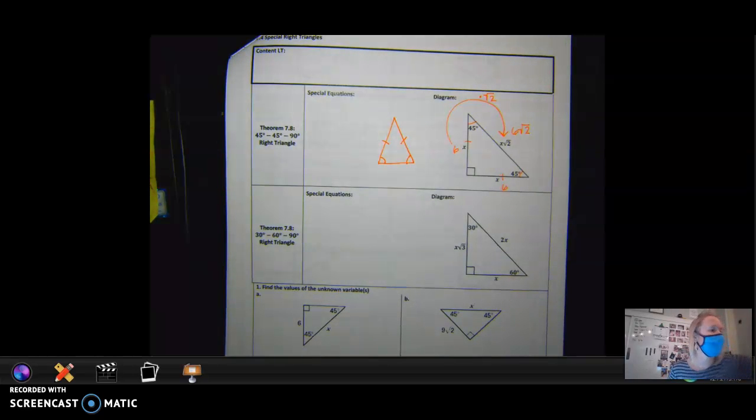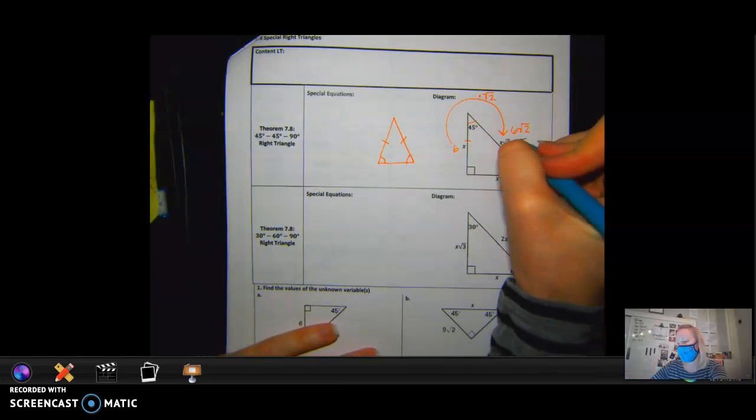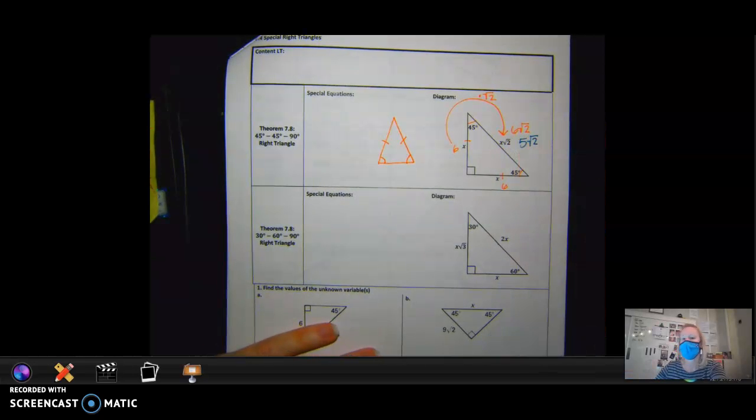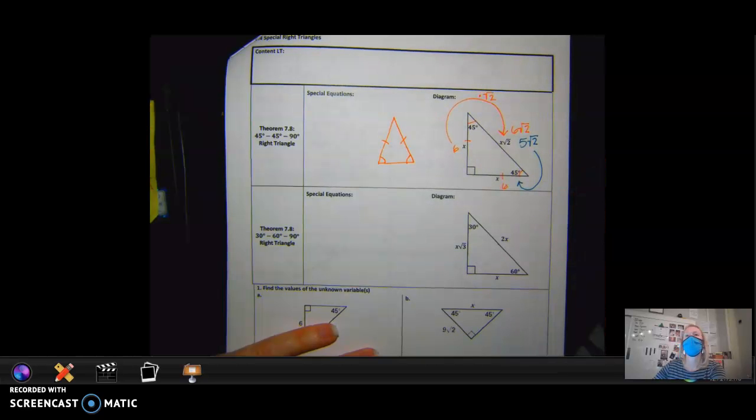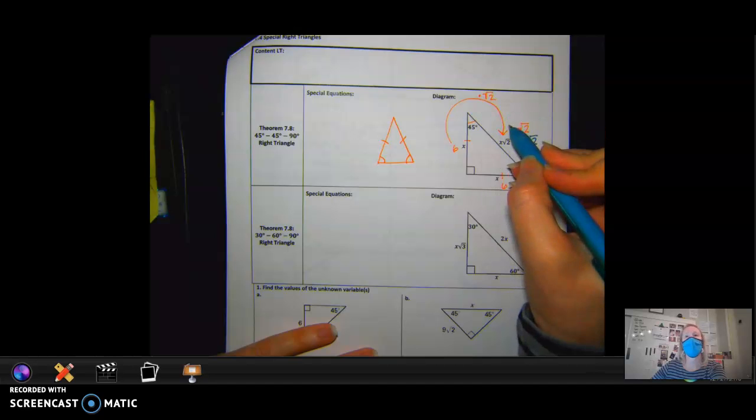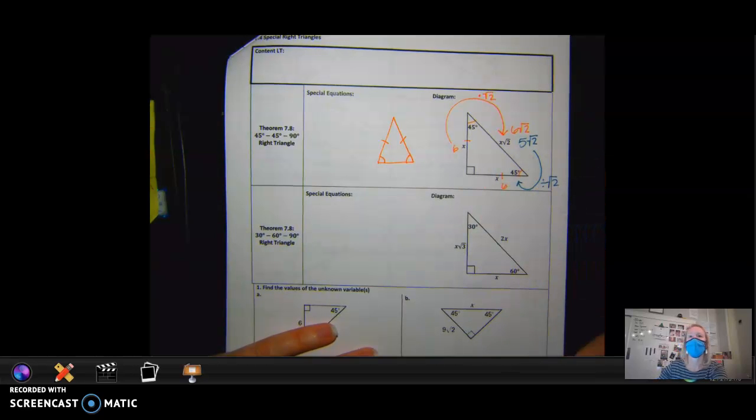Now, let's say I gave you the hypotenuse. Let's say I gave you the hypotenuse was 5 square roots of 2. How would I go backwards to find a side length? So if I go forward, I multiply by the square root of 2 to get the hypotenuse. If I go backwards, I divide by the square root of 2. So what would the side length be if it was 5 square roots of 2 out there? 5.